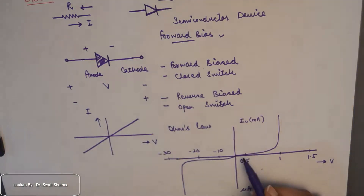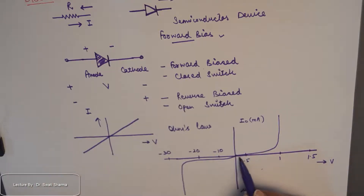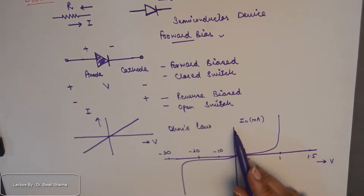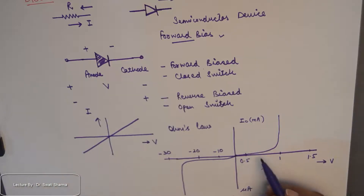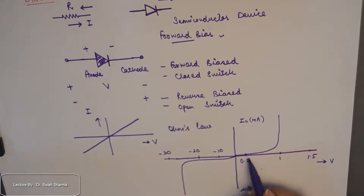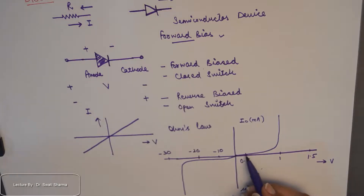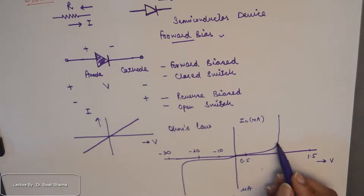Looking at the positive VI characteristics — that means the first quadrant — we notice that for voltage values up to about 0.5 volts there is practically zero current. As we go on increasing the positive voltage beyond that point, the value of current increases exponentially.